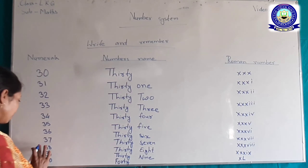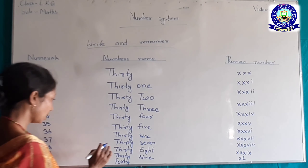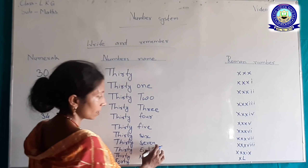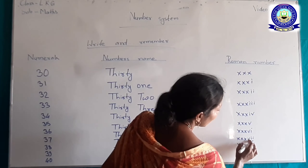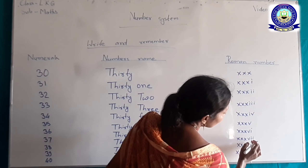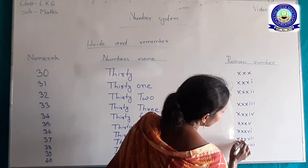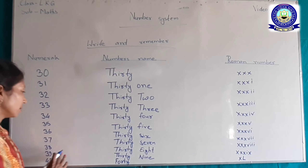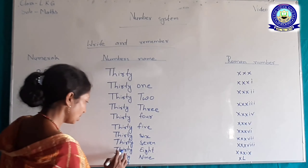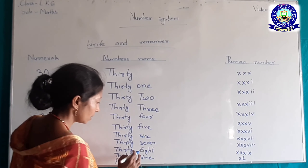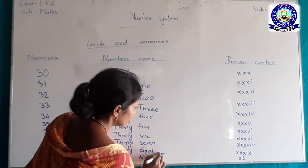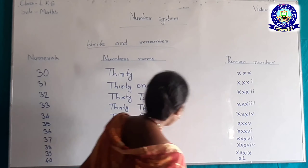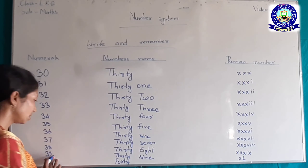37 — T-H-I-R-T-Y S-E-V-E-N, 30 plus 7, Roman number Triple X V Double I (XXXVII)। 38 — T-H-I-R-T-Y E-I-G-H-T-Y, Roman number Triple X V Triple I (XXXVIII)।